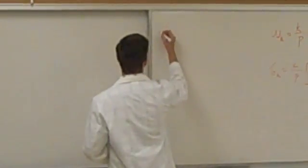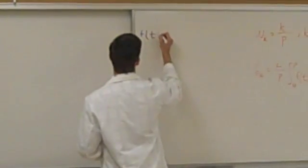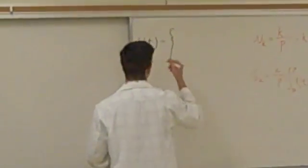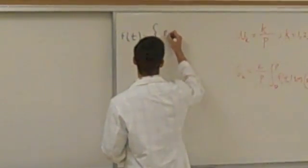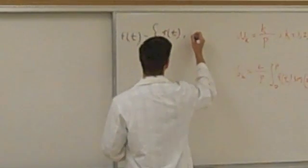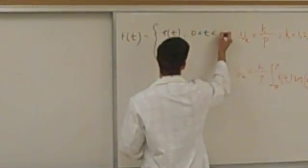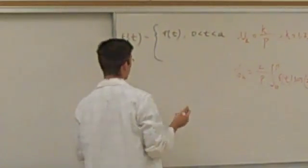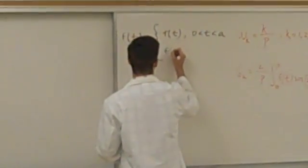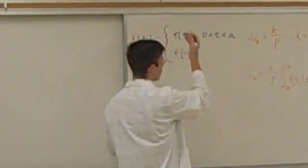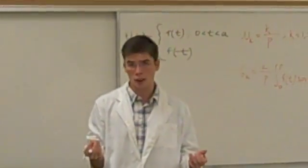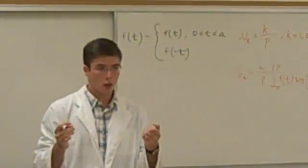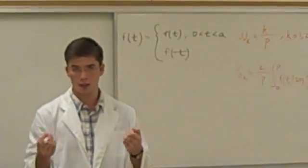Let's say you have some sort of a function f of t. The even representation of it would be f of t on some interval from 0 to a, where a is some sort of stopping point — the interval in which we are analyzing our system from 0 to a. And f of negative t is the exact same thing as f of t, like the cosine, for instance. The cosine is symmetric about the y-axis, so no matter if you put cosine of negative x or cosine of x, you're going to get the exact same y-value.